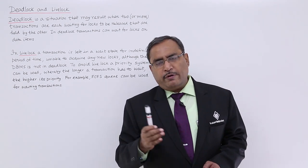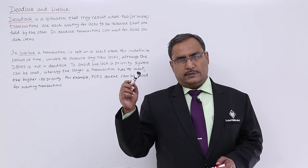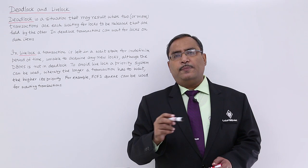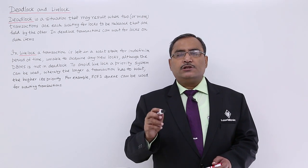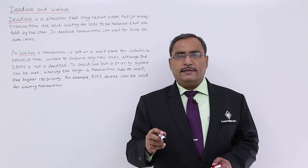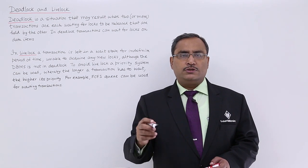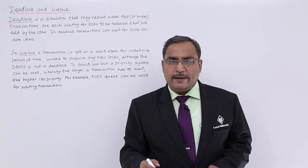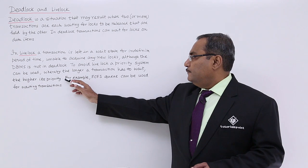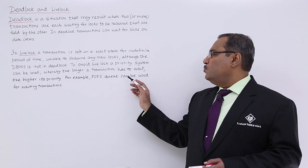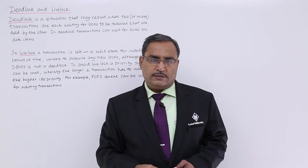That means whenever a transaction keeps waiting, the system will increase the priority of that transaction, so that it will eventually get access to some data items through locks. For example, FCFS (First Come First Served) queuing can be used for waiting transactions.